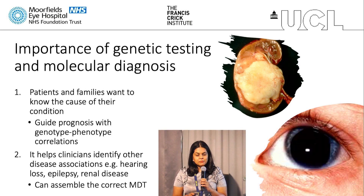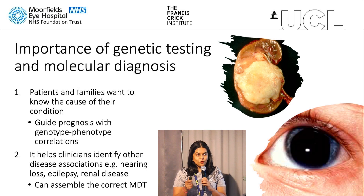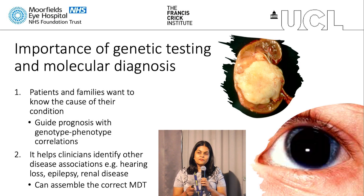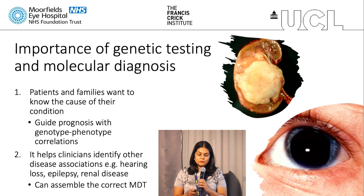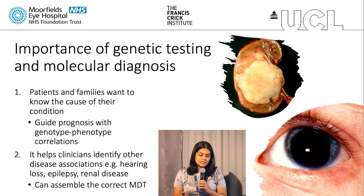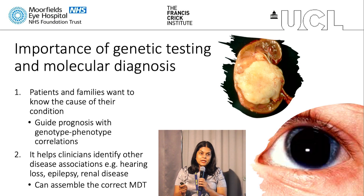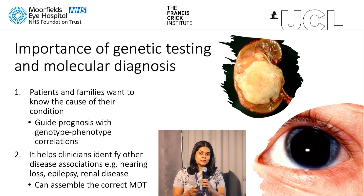The importance of genetic testing and molecular diagnosis: patients and families want to know the cause of their condition, despite there not being a treatment as such. For us, it guides prognosis, so we can advise families whether they will have a milder or more severe prognosis. It can help us establish genotype-phenotype correlations and identify other disease associations. Although the majority of patients have PAX6 mutations, some patients may have other genetic causes such as FOXC1, CYP1B1, or — as we've just heard — a possible MAF deletion.